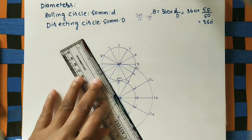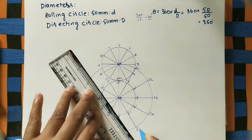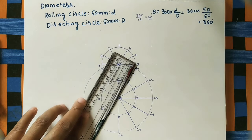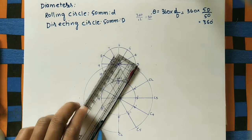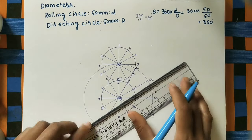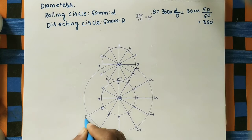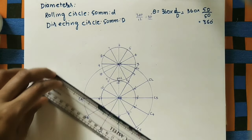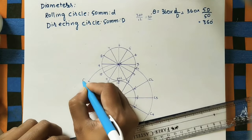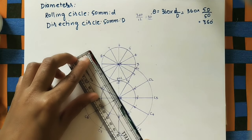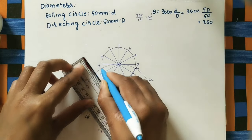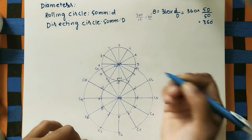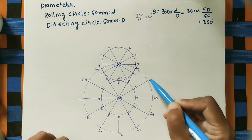Continue marking center positions: C5, C6, C7, C8, C9, C10, C11, and C12 — C12 comes back to the initial position. So the rolling circle changes its center from C to C1, C2, C3, all the way to C12 as it completes one full rotation.